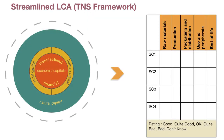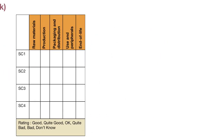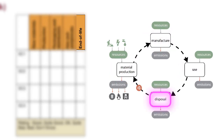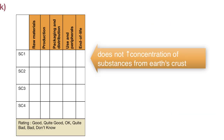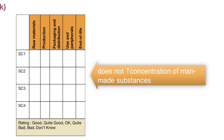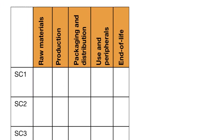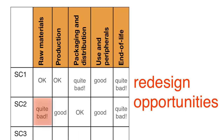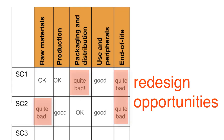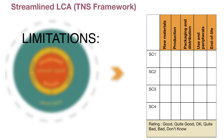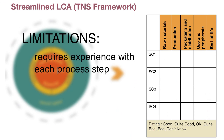In the streamlined LCA process, one creates a matrix of each stage of the lifecycle against the sustainability principles. This matrix is then used to rate each of the lifecycle stages against each of the four criteria. This method reveals possible high leverage intervention points within the lifecycle. One limitation is that it requires a great deal of a priori knowledge about the impacts, and it is also limited to known practices for which the impacts can be rated.